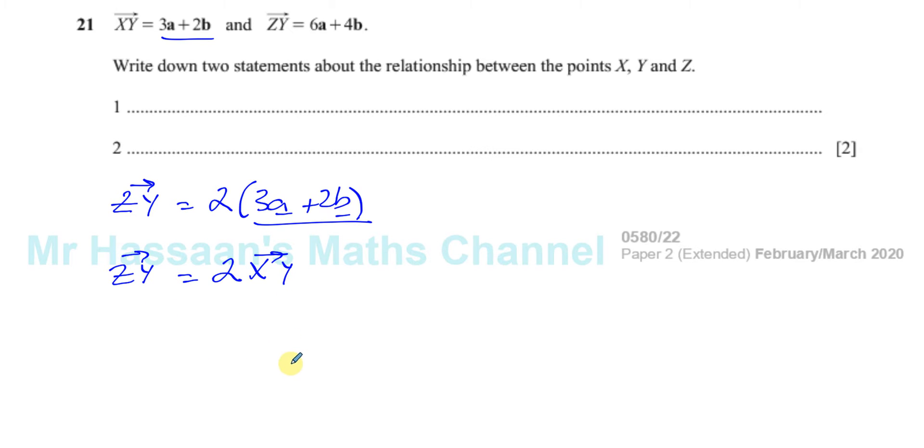So that means the length from Z to Y, let me just draw a line. Just imagine this is the vector Z to Y. Say this is Z and say this is Y. Now, we can see that this is twice X to Y, and because X to Y and Z to Y are in the same direction and they both pass through the point Y, that means they must be on the same line because they are expressed as the same vector means that they're parallel.